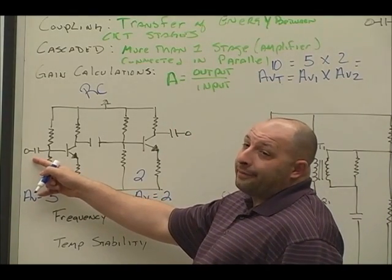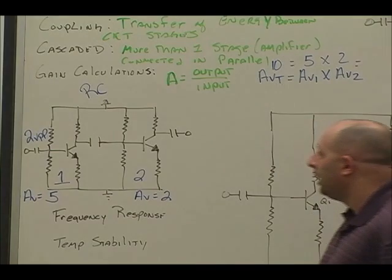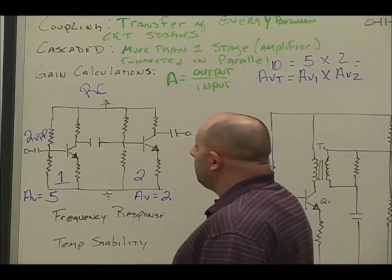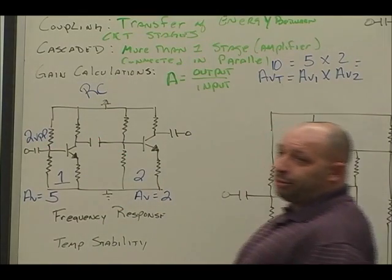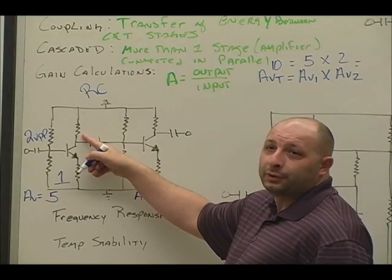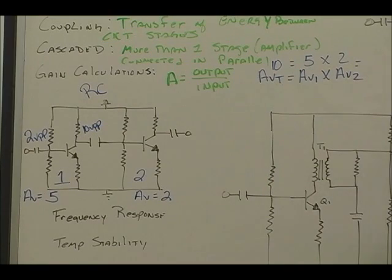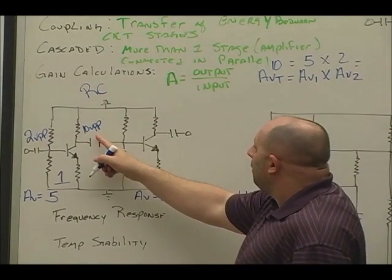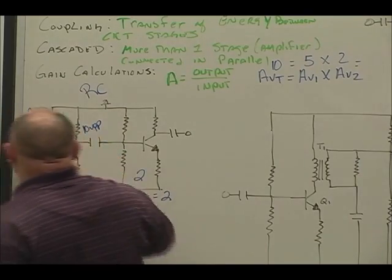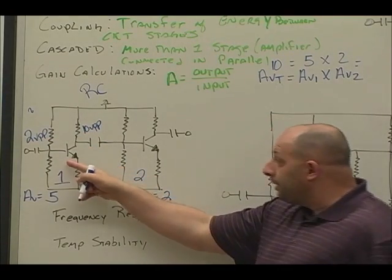So now we can take it a little bit further and let's say I do have a known input. Let's say it's two volts peak to peak, for example. Now, I expect gain for stage one to be five. So how can I determine the output? I can take the gain and multiply by the input and I go five times two is ten. Ten volts peak to peak.